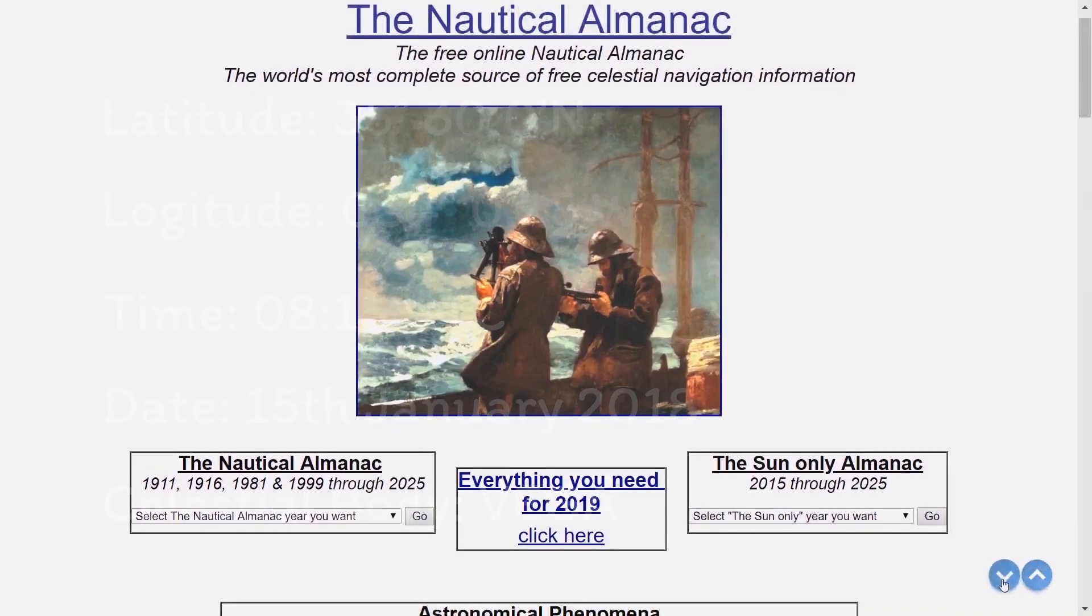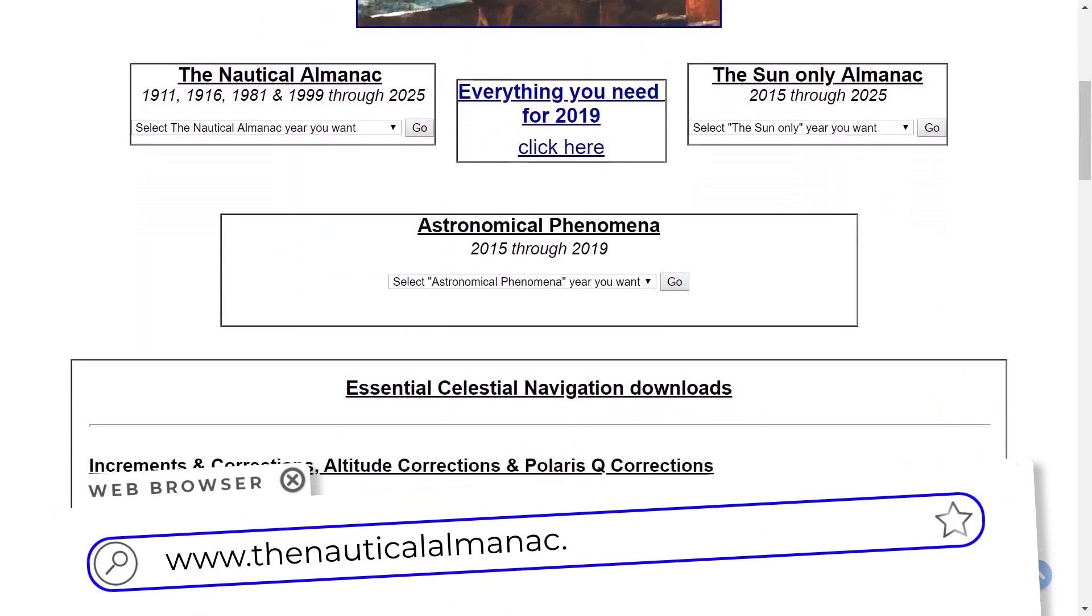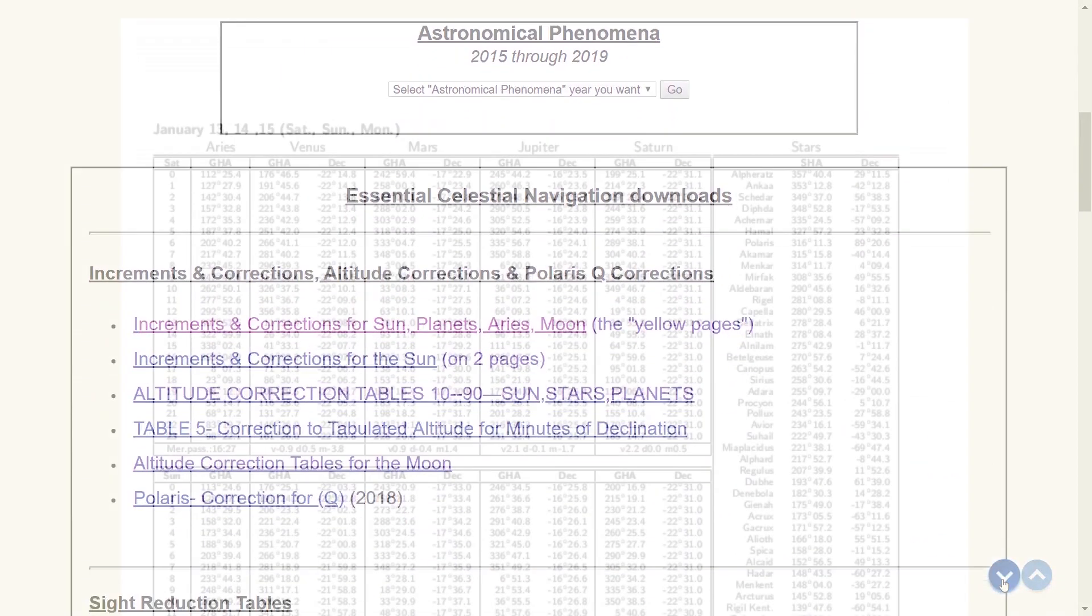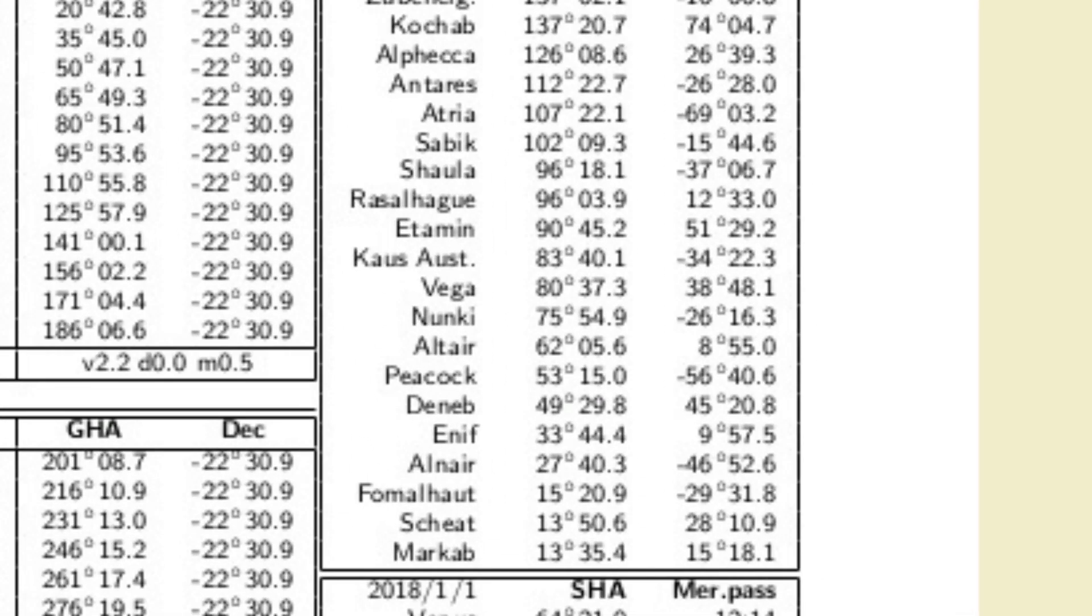The body that we're interested in is Vega. And we start by turning to the nautical almanac. I'm going to use the one from thenauticalalmanac.com, and you'll find the link in the description below. I want the daily page for the 15th of January. Firstly, the data for Vega. Its sidereal hour angle, or SHA, is 80 degrees, 37.3 minutes, and its declination is 38 degrees, 48.1 minutes north.